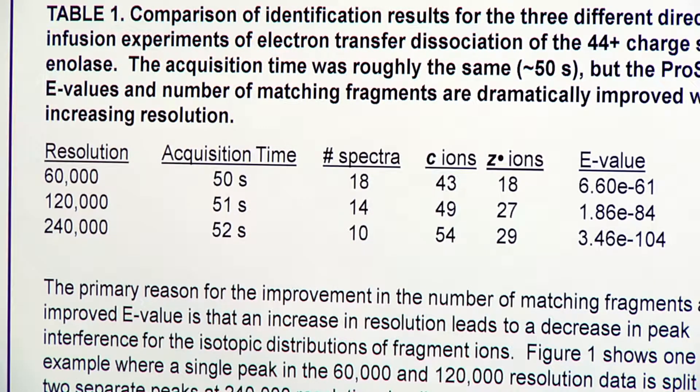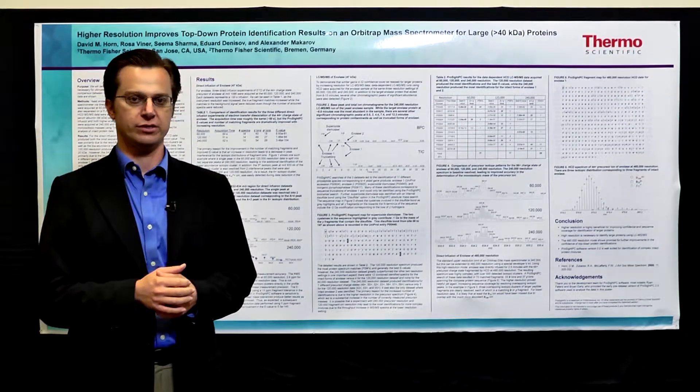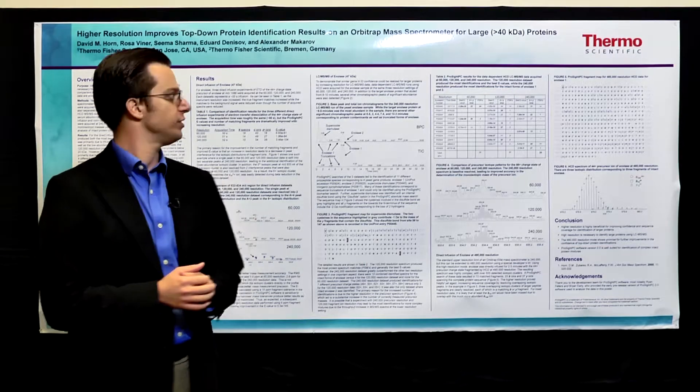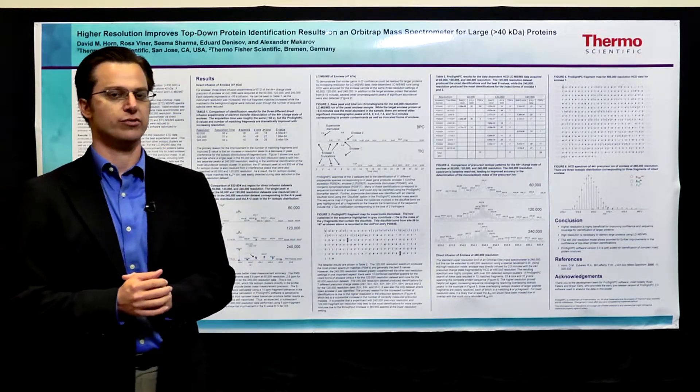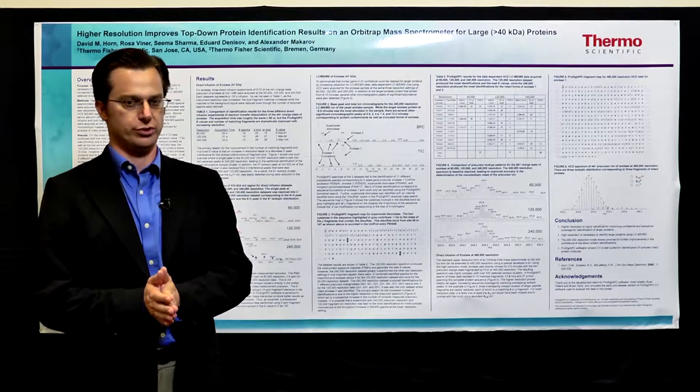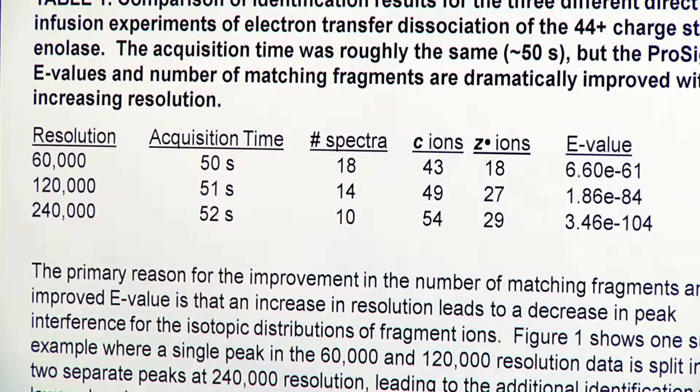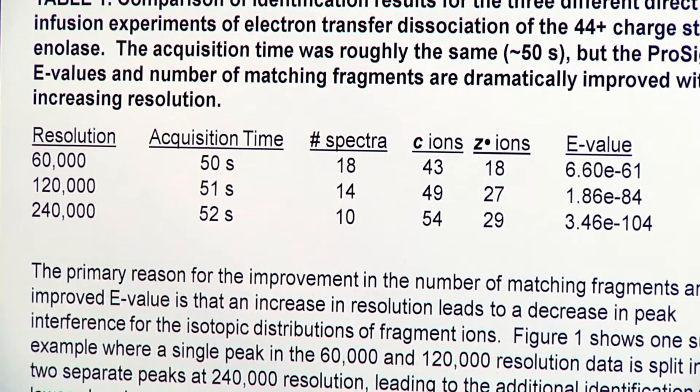What we had found is as the resolution is increased, the confidence in the identification goes up from 10 to the minus 61, this is from our ProCyte PC identification result against the enolase sequence, up to 3.5 times 10 to the minus 104, which is extremely confident at 240,000 resolution.